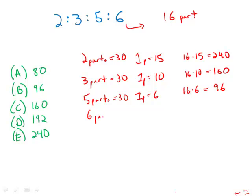If six parts equal 30, well, then one part equals five. And then 16 parts, 16 times five is 80.